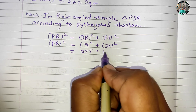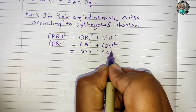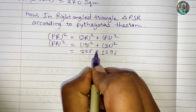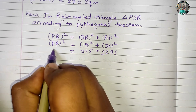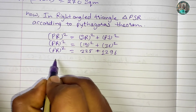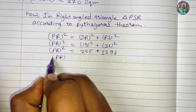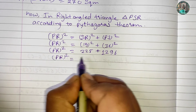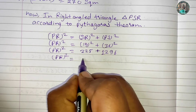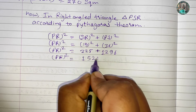36 squared is 1296. Now what is PR squared? Adding 1296 and 225 gives 1521. So PR squared equals 1521.